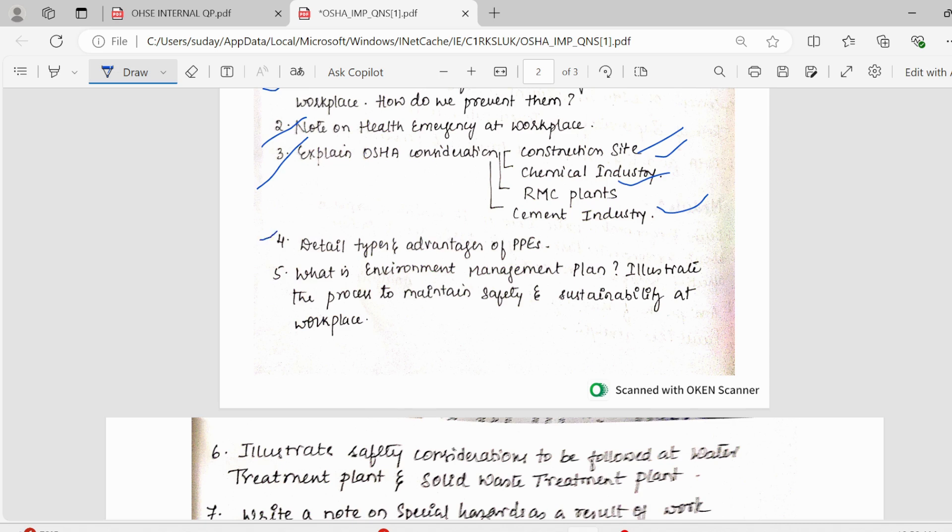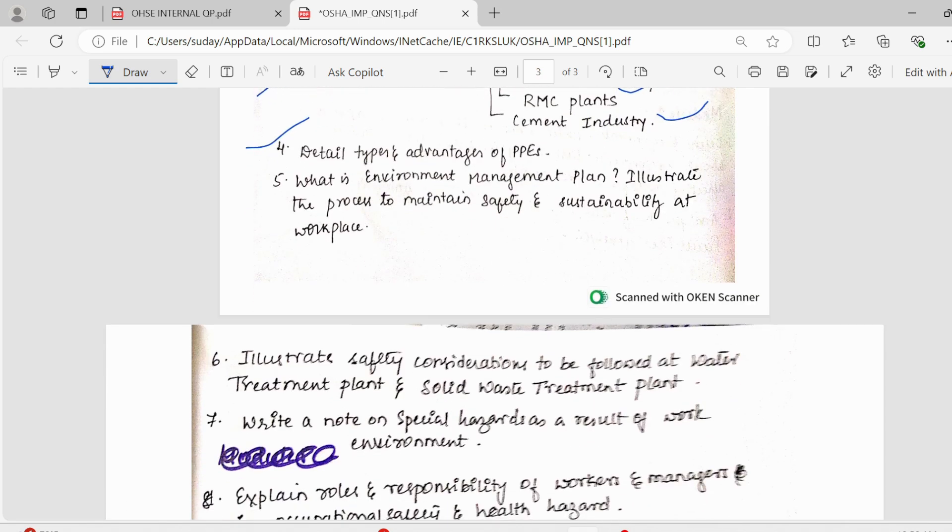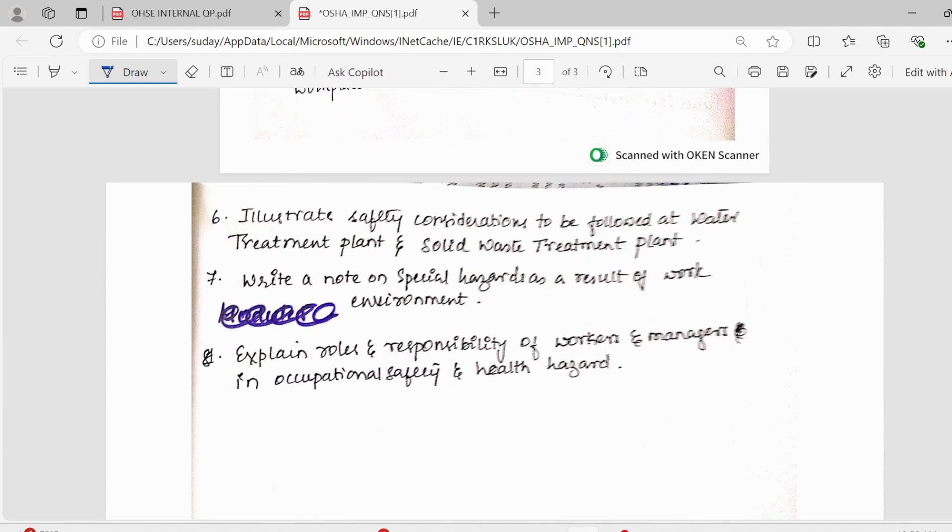Then, we have what are the advantageous types of PPE, personal protective equipment. Then, we have what is environment management plan? This is an important question, make sure you cover this properly. Illustrate the process to maintain safety and sustainability at workplace. Then, we have safety considerations to be followed at water treatment plant and solid waste treatment plant. As I told for the above part, what is the scenario there? What are the possible threats, possible hazards? And how do you provide safety there?